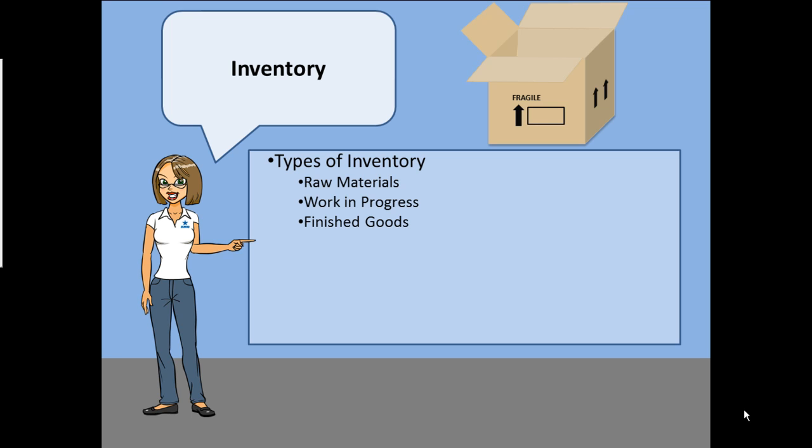Remember in the earlier example when we discussed widgets? The widgets were the most requested products so they were in close proximity to the loading and unloading area. This is a good example of first in, first out, or FIFO, which is one method for determining inventory value. Other methods are last in, last out, or LIFO, average cost, actual cost, and standard cost.